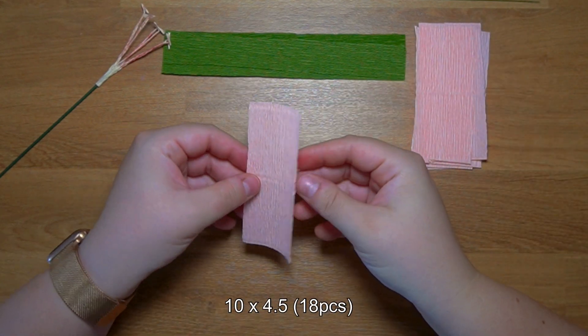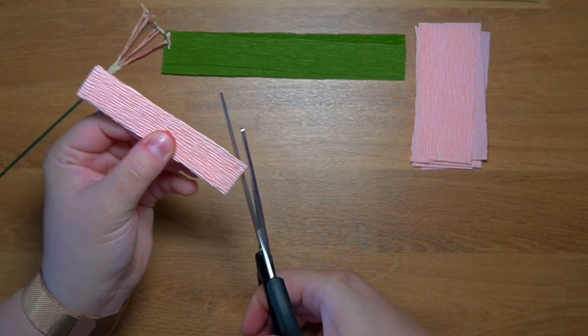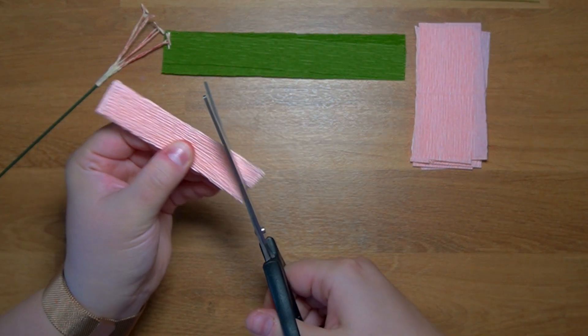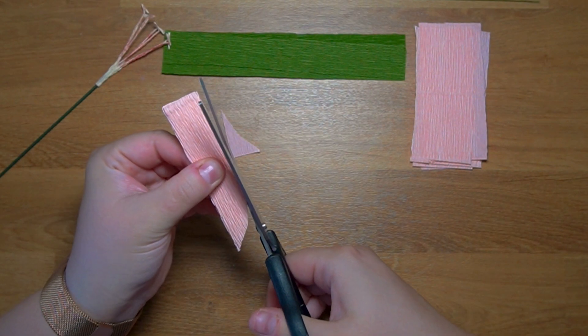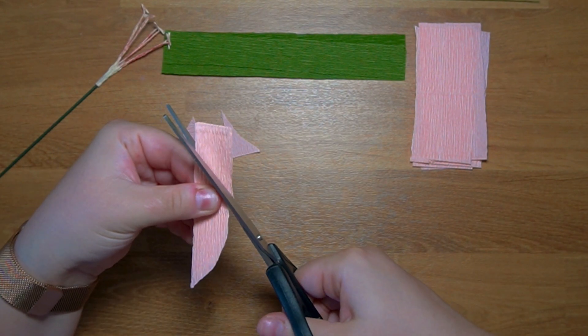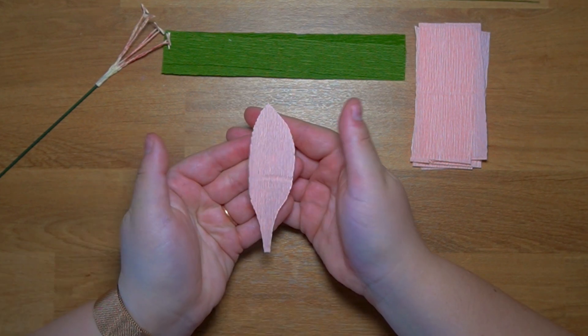And now let's start working on the petals. For each flower we are going to use six petals so 18 pieces in total. This flower is a pretty simple one as in all of the petals have the same shape.